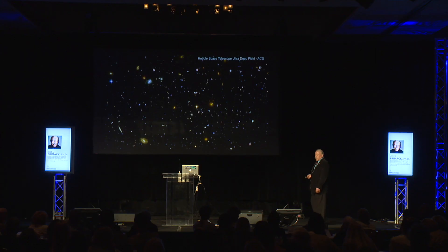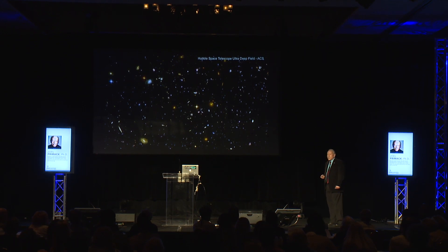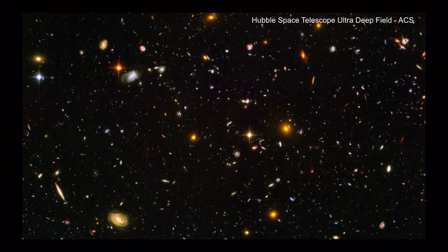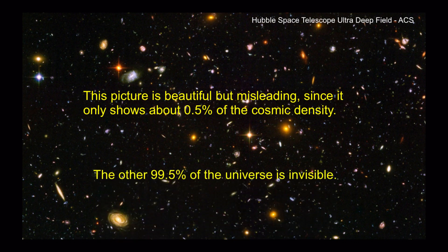We get this sort of information from our greatest telescopes, and this is the deepest image taken with our sharpest view, the Hubble Space Telescope. It's a remarkable image, but it's also a little misleading because, as I said before, it only shows half of 1% of what's actually there. The other 99.5% of the universe is invisible.